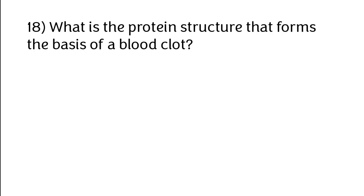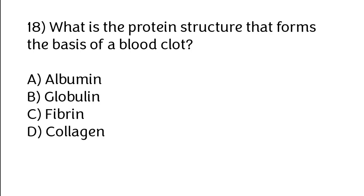What is the protein structure that forms the basis of a blood clot? Options: Albumin, Globulin, Fibrin, Collagen. The correct answer is Option C: Fibrin.